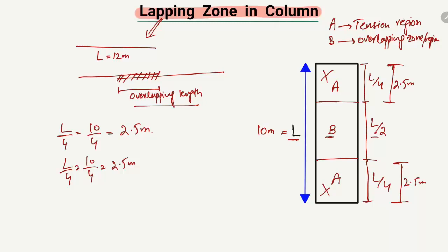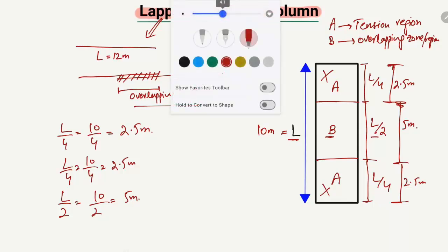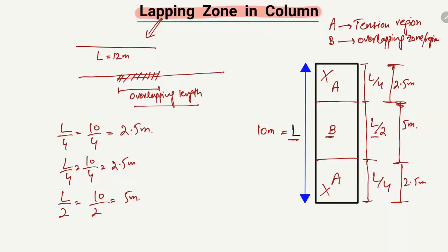L/2 means 10 divided by 2, which gives us 5 meters. It means only in the mid portion of the column, at 5 meters, we can do our overlapping. So here, if this is one steel bar coming from the top, we can do our overlapping only within this 5-meter length — L/2 in the middle of the column. This is the lapping zone for the column.